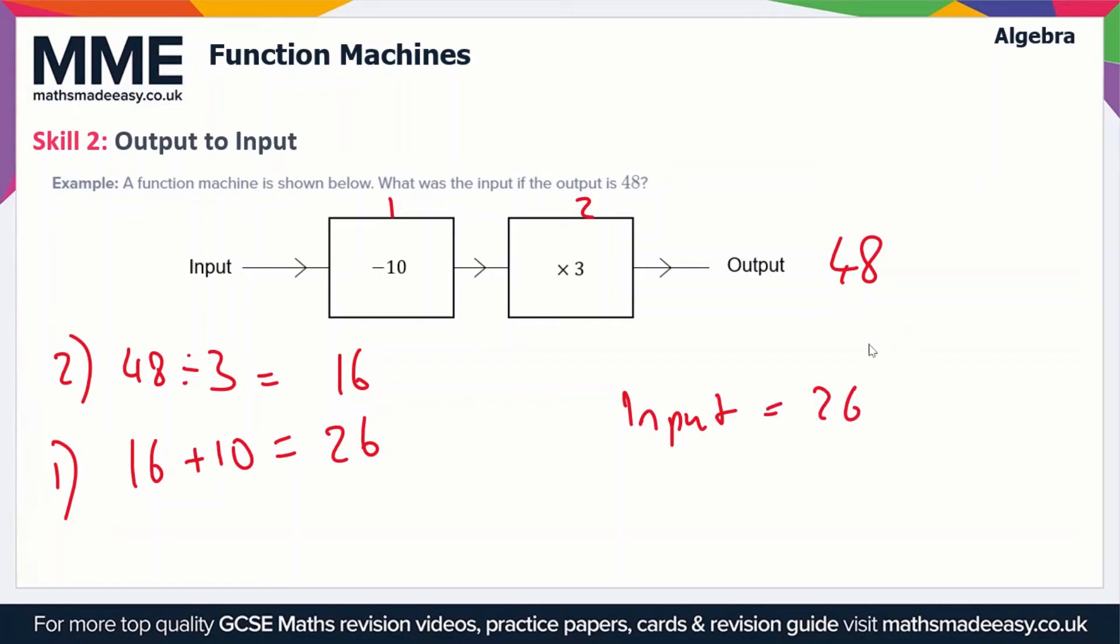Now you can check this by going through the operations again just to make sure it makes sense. 26 minus 10 gives us 16. 16 times 3 is 48. Therefore, that's the correct answer.